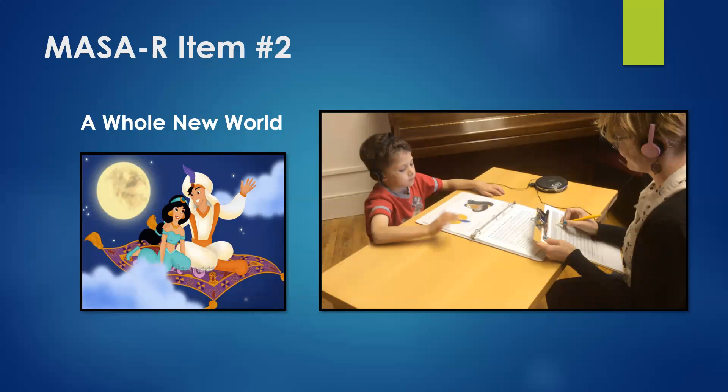For MASA-R item two, the popular song 'A Whole New World' is used. The child is tasked with touching the picture of the singer of the song. Whenever there's a change in vocalist, the child points to a picture of Aladdin (the male vocalist) or Jasmine (the female vocalist), or both if they're singing at the same time. This is a more sophisticated type of attention.